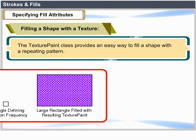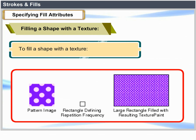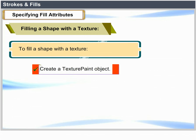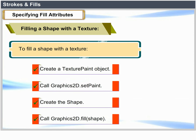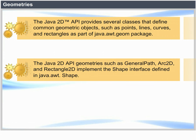Filling a shape with a texture: The TexturePaint class provides an easy way to fill a shape with a repeating pattern. To fill a shape with a texture, create a TexturePaint object, call Graphics2D.setPaint, create the shape, and call Graphics2D.fill. Geometries: The Java2D API provides several classes that define common geometric objects such as points, lines, curves and rectangles as part of the java.awt.geom package. Java2D API geometries such as GeneralPath, Arc2D and Rectangle2D implement the Shape interface defined in java.awt.Shape.